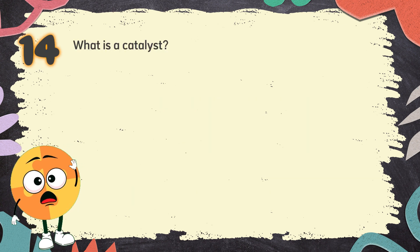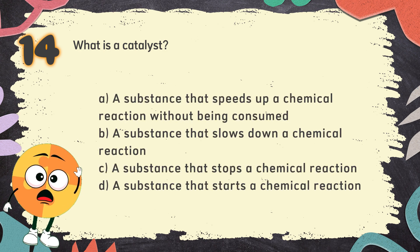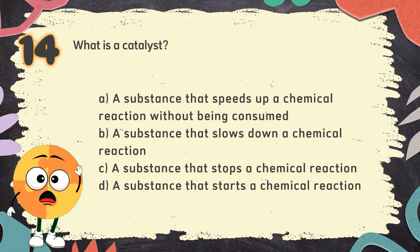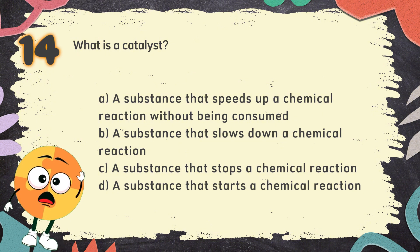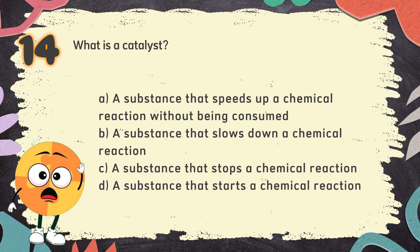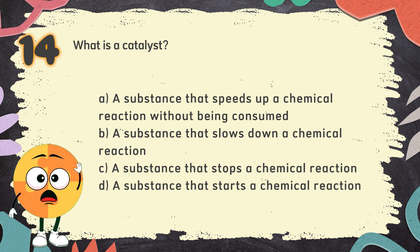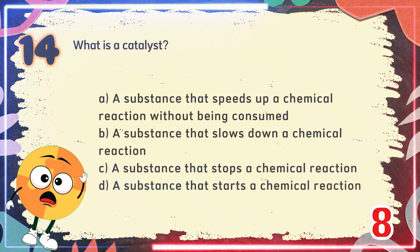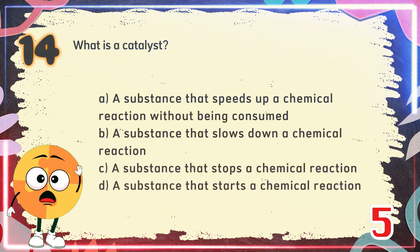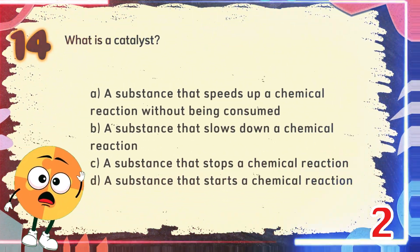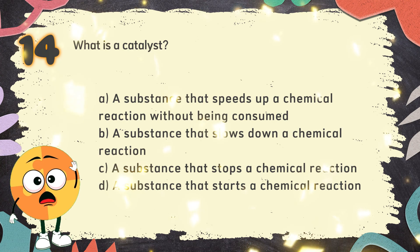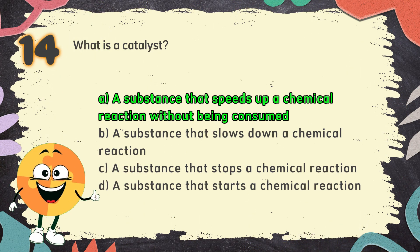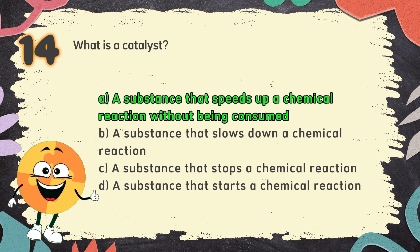Number 14. What is a catalyst? The choices are: A. A substance that speeds up a chemical reaction without being consumed, B. A substance that slows down a chemical reaction, C. A substance that stops a chemical reaction, D. A substance that starts a chemical reaction. The correct answer is A. A substance that speeds up a chemical reaction without being consumed.